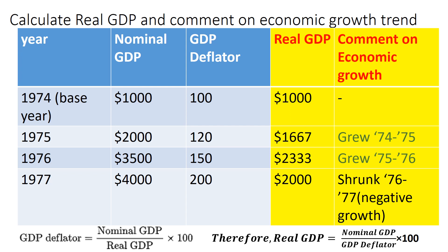Let's recall that the GDP deflator equals nominal GDP divided by real GDP times 100. For the base year, let's first calculate real GDP from this data. Nominal GDP is 1000, divided by 100 — that's the GDP deflator — times 100, so 1000 divided by 100 is 10, and 10 times 100 is 1000.